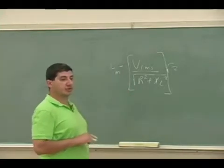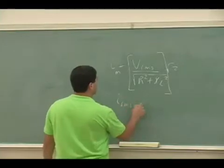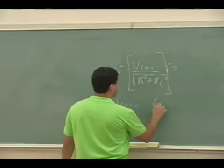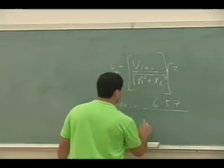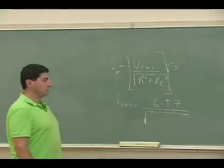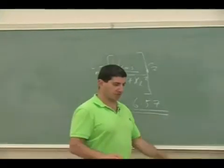Okay, so what should the ammeter be measuring then? Ammeter measures I root mean square. So this is 6.57 divided by square root of, okay, and now I could put here, let's say I use a resistance of 100.